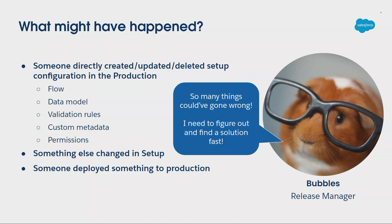As a good release manager, I know that probably some admin did something directly in production. Could be updating a flow, could be playing with the data model, could be updating a validation rule, custom metadata, permissions, Apex, whatever. We know that a silly admin can break a perfect production org in a single click. That's also the power of Salesforce.